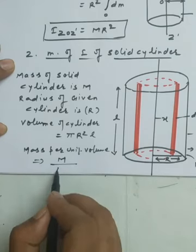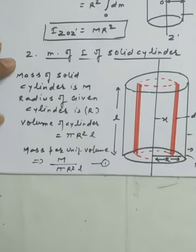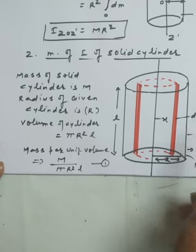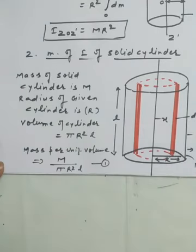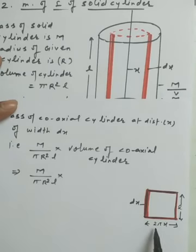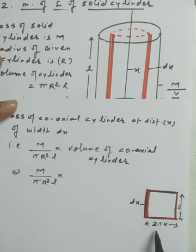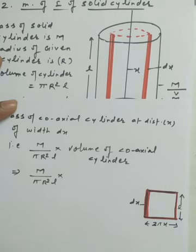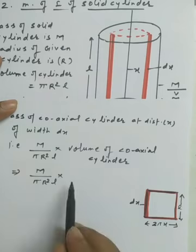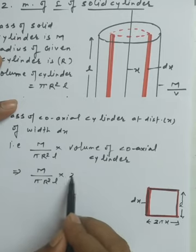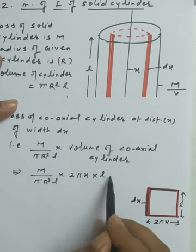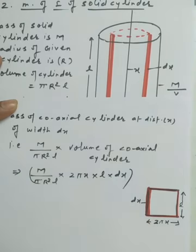The mass per unit volume is rho = M divided by (pi R² l). We want to find the mass of the element at distance x with width dx and length l. To find the volume of this coaxial cylindrical shell, we unroll it: its length is l, breadth is 2 pi x, and thickness is dx. So the volume of the element is 2 pi x times l times dx.